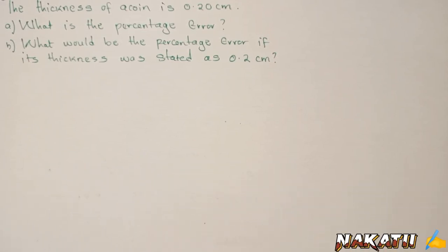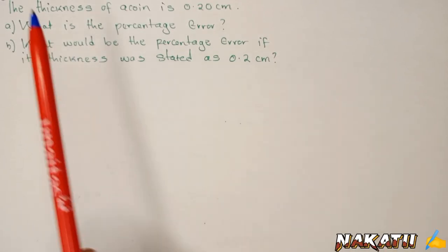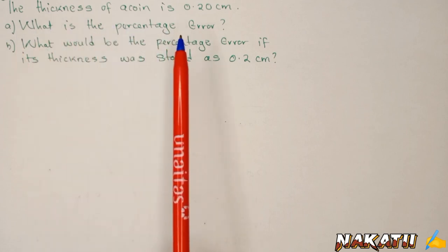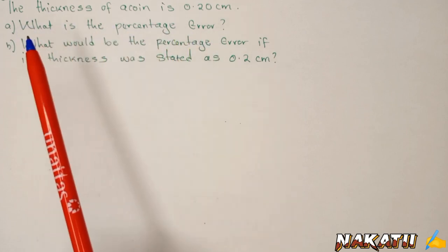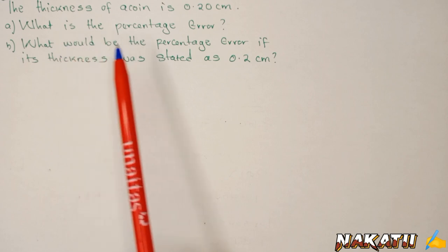Hello and welcome. We have a question with us. It says that the thickness of a coin is 0.20 centimeters. The first question is, what is the percentage error?